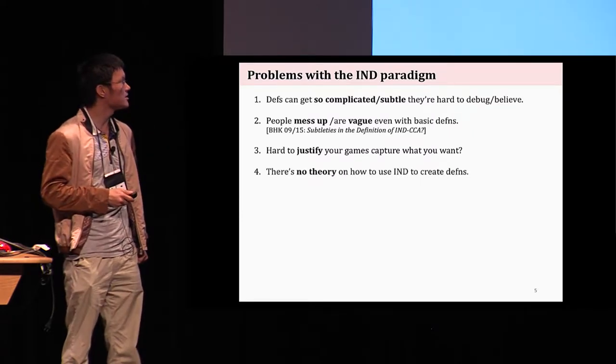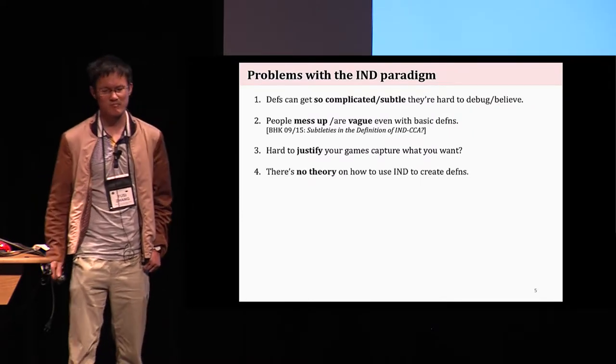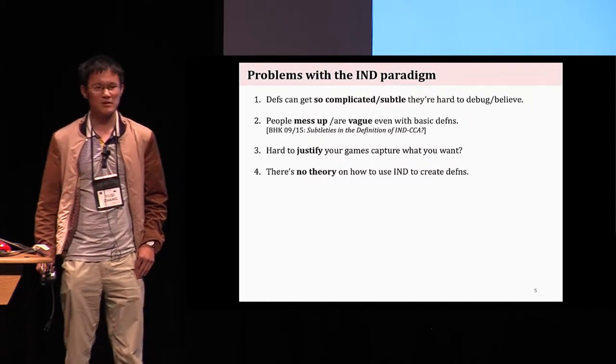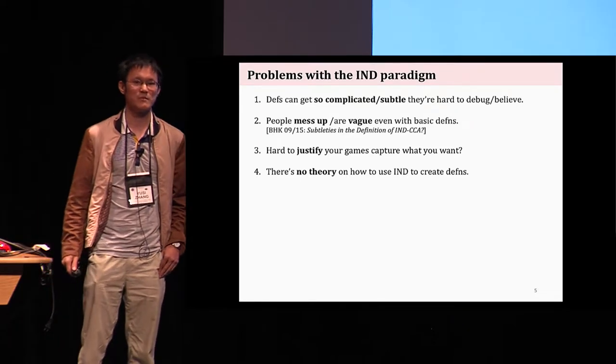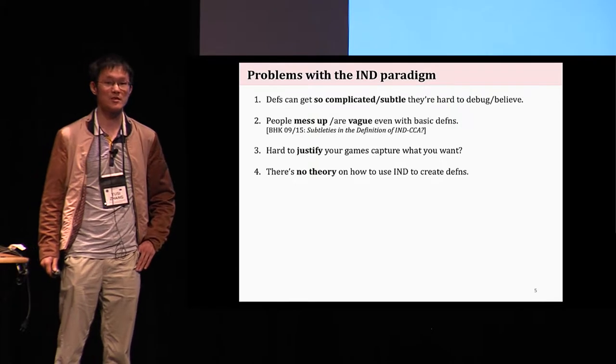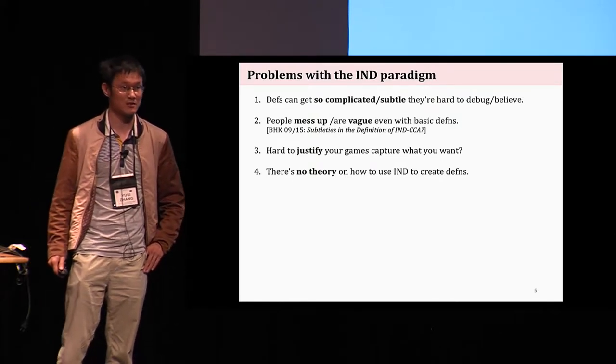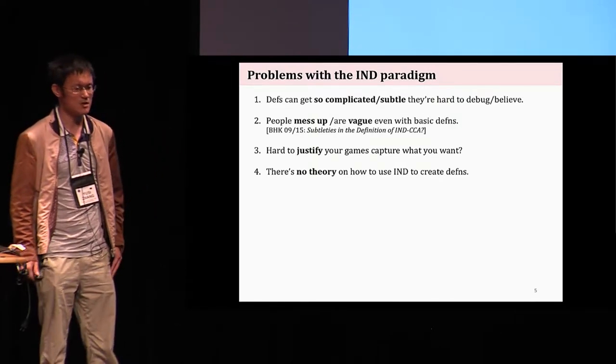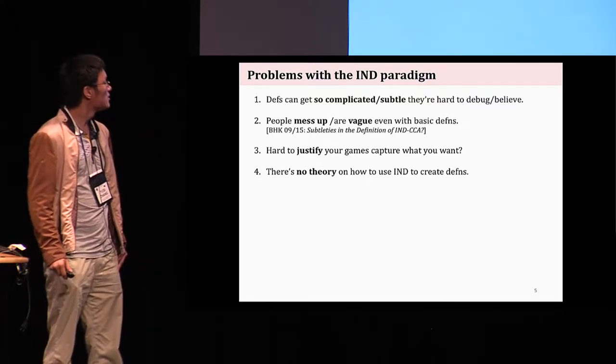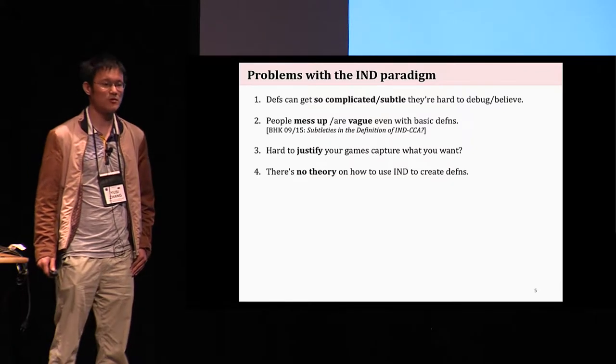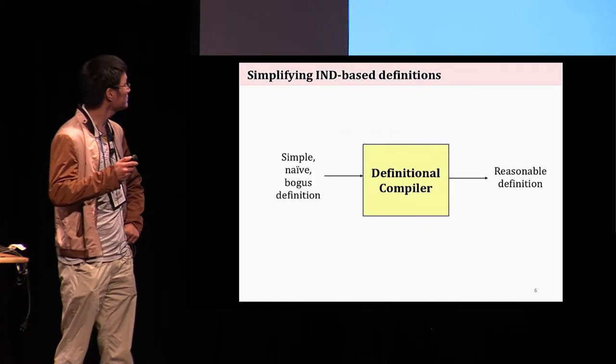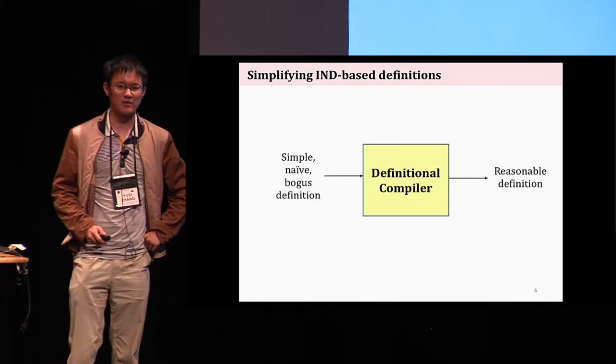Part of the reason for that is there's no good theory for cryptographers to use for how to create security definitions. In the literature, we have many good tools and theories to upper bound adversary advantage given existing security definitions, security notions like coefficient H methods, expectation arguments, for example. But as for how to create security definitions, typically we're on our own.